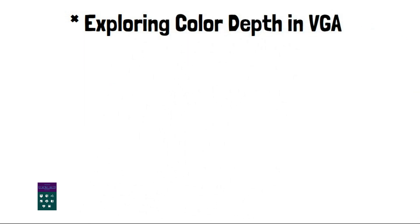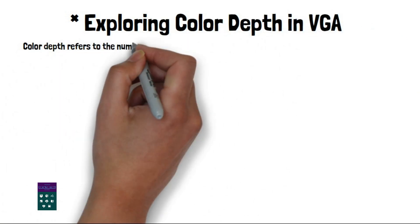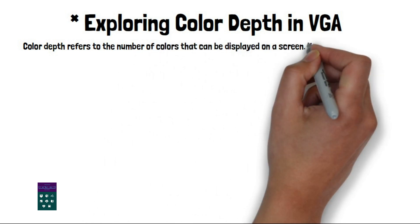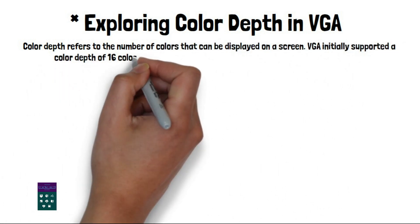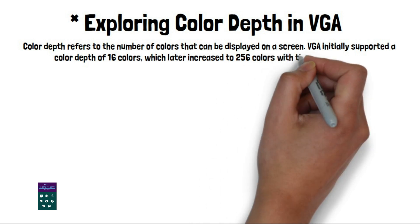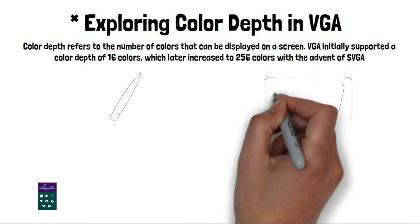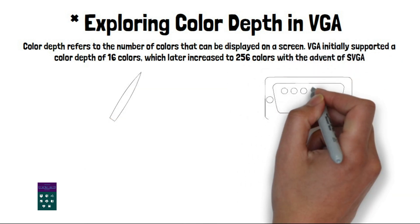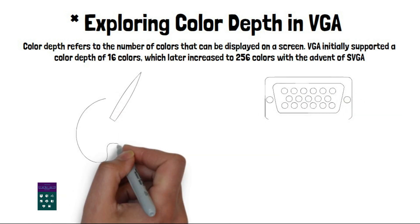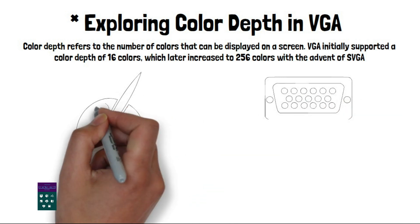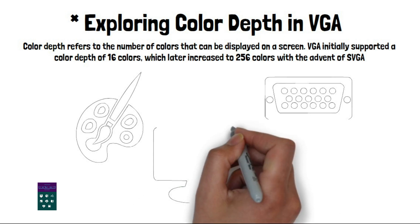Color depth refers to the number of colors that can be displayed on a screen. VGA initially supported a color depth of 16 colors, which later increased to 256 colors with the advent of SVGA. Today, VGA can display up to 16 million colors by using color palettes and advanced techniques like dithering.